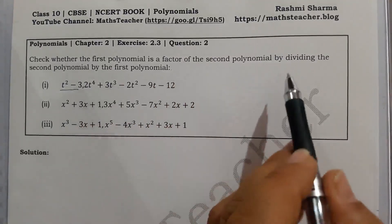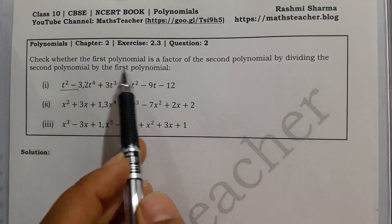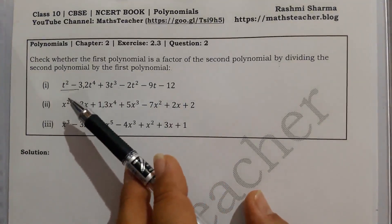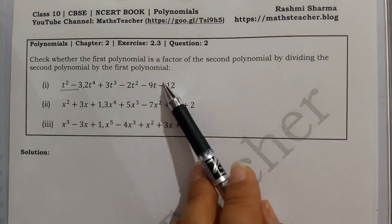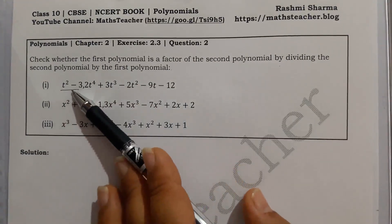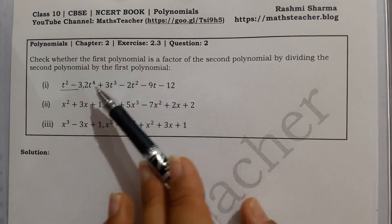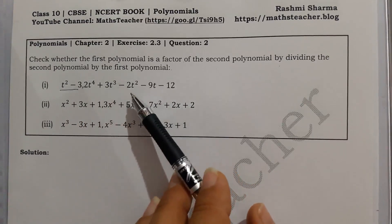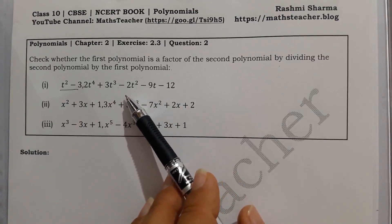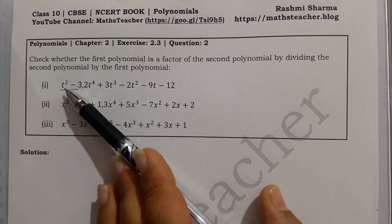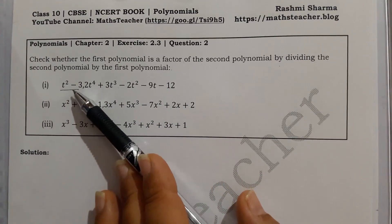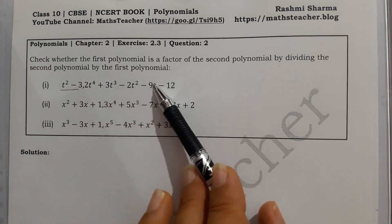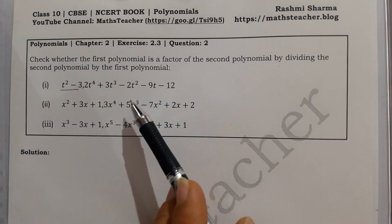We start by dividing the second polynomial by the first polynomial to check if it is a factor. Any polynomial is a factor if the remainder is 0 when you divide. If the remainder is 0, then it is a factor. The factor means the value of this polynomial completely satisfies the equation.